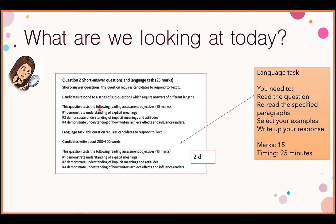We're skipping down to the language task — question 2D. For the language task you need to read the question, then re-read the specified paragraphs, select your examples, and then write up your response. You need to do all of that in 25 minutes. The good thing is that at this point in the exam you will have already read Text C.